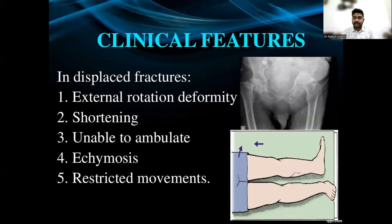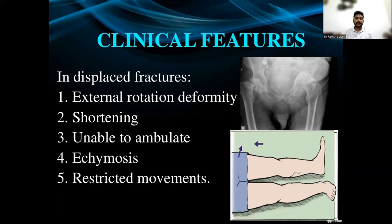On clinical examination, the affected limb will typically be held in external rotation deformity. Due to muscle pull, there will be shortening of the affected limb. The patient will not be able to perform the straight leg raise test. There can be ecchymosis or bruising over the groin and trochanteric area, and there will be restriction or painful range of movement of the affected hip joint.